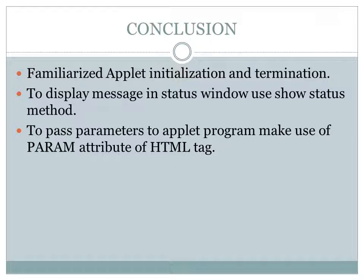In this tutorial we covered applet initialization and termination, reviewing the order lifecycle methods are invoked: init, then start, then paint, and finally stop and destroy. We also saw what a status window is and how to display a message in it using showStatus. Finally, we examined the various attributes of the HTML applet tag — both required and optional — including how to pass parameters to an applet program using the param attribute.